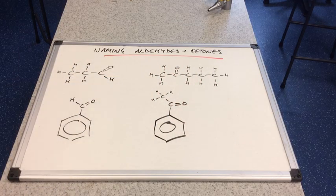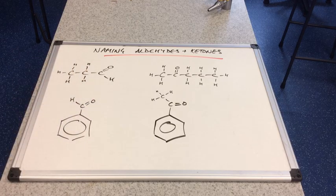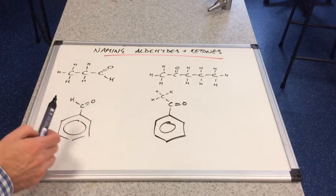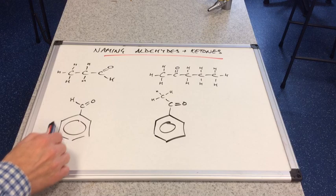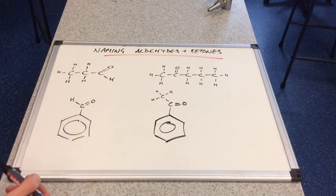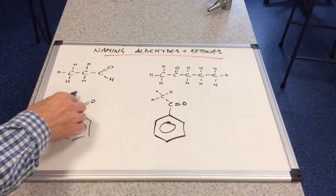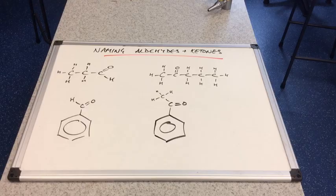This is propanal with three carbons. This is also an aldehyde, a bit more difficult to name. This is a phenyl group - a benzene ring with an H missing, C6H5. So this is a phenyl group on what would have been a methanol molecule. This would be called phenyl methanol.